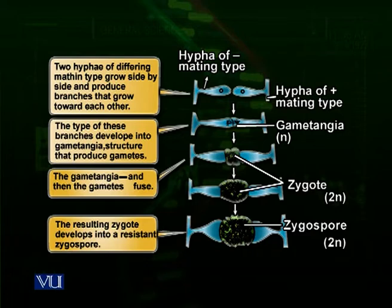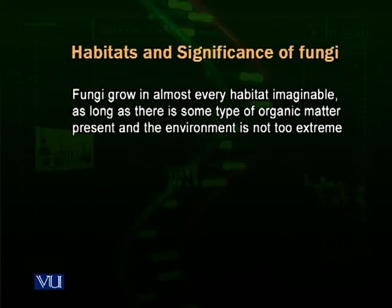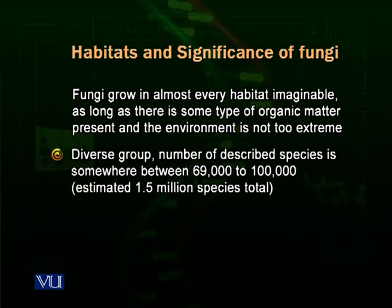The zygospore can survive harsh environments, and when favorable conditions return, it carries out meiosis and produces cells with n chromosomes, then generates haploid mycelia. Fungi grow almost everywhere — in humid and dry places all over the world. This is a very diverse group; the number of described species is somewhere between 69,000 and 100,000, with an estimated total of about 1.5 million species of fungi on planet Earth.